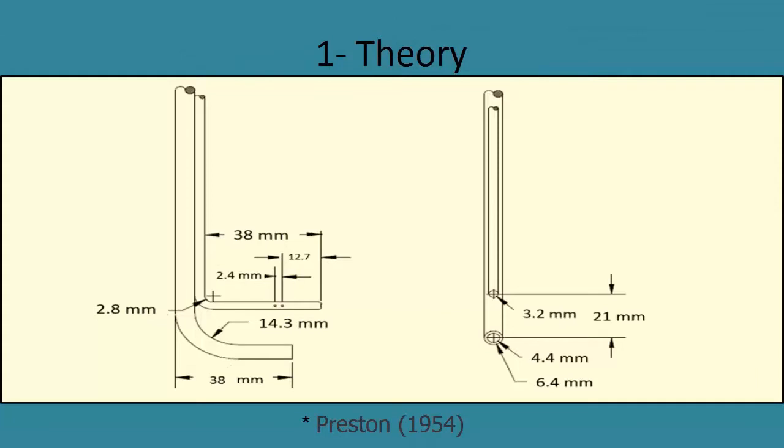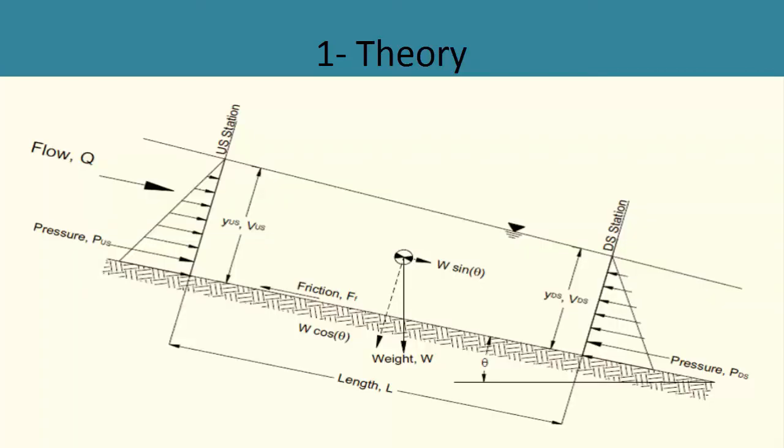Preston in 1954 suggested a linear relationship between the velocity at the boundary and the bed shear stress. Dimensions of the tube used to measure the velocity head are as shown.